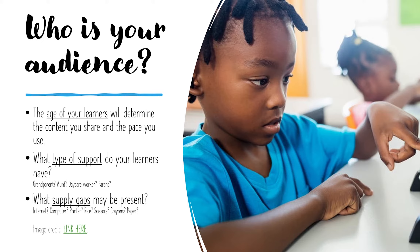Item number three: what supply gaps may be present? Do the children in your classroom have access to the internet? Do they each have a computer? Do they have access to a printer? If you're working on a science experiment requiring rice, do they have access to those resources — even scissors, crayons, or paper? Think about what you're expecting them to use, and try not to assume that every household will have access to all of those supplies.